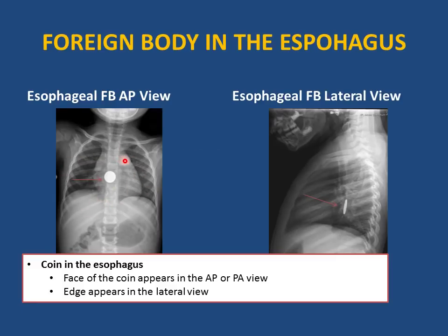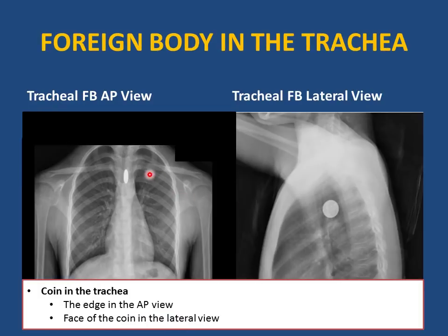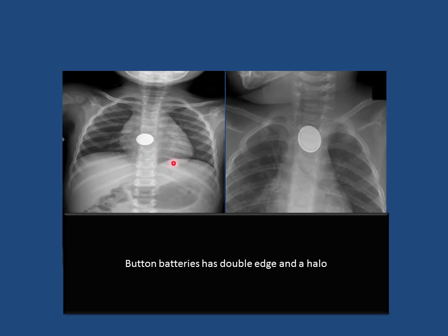On AP/PA view, a coin in the esophagus shows its face (round); on lateral view, you see the edge. A coin in the trachea shows its edge on AP/PA view and its face on lateral view. This difference helps distinguish esophageal from tracheal foreign bodies. Also, on frontal projection, a battery in the esophagus looks like a coin but has a double edge and hollow center distinguishing it from a solid coin.